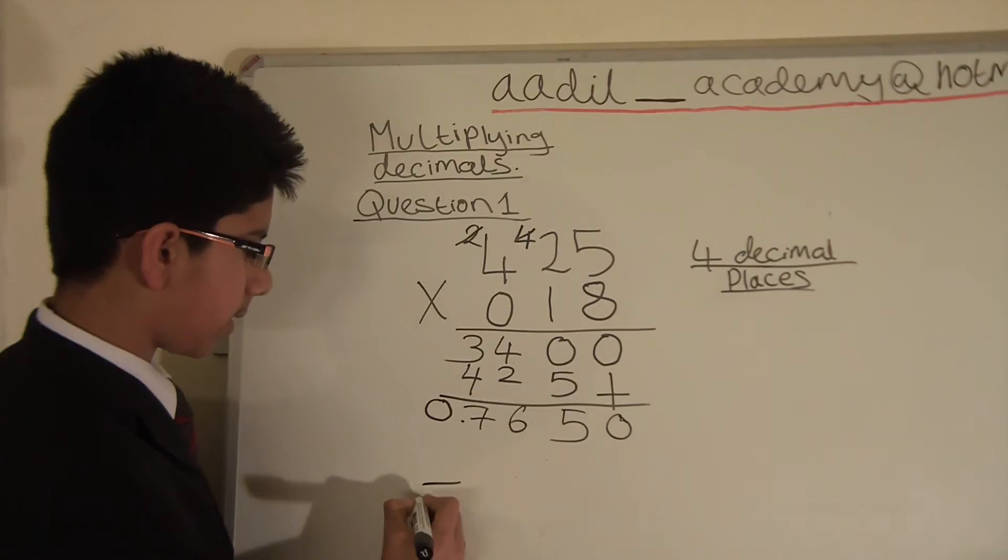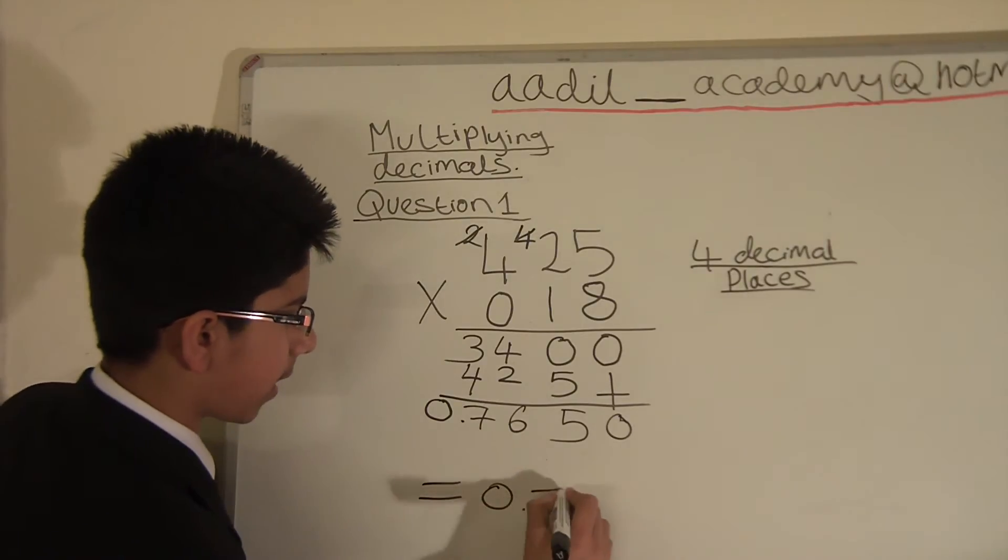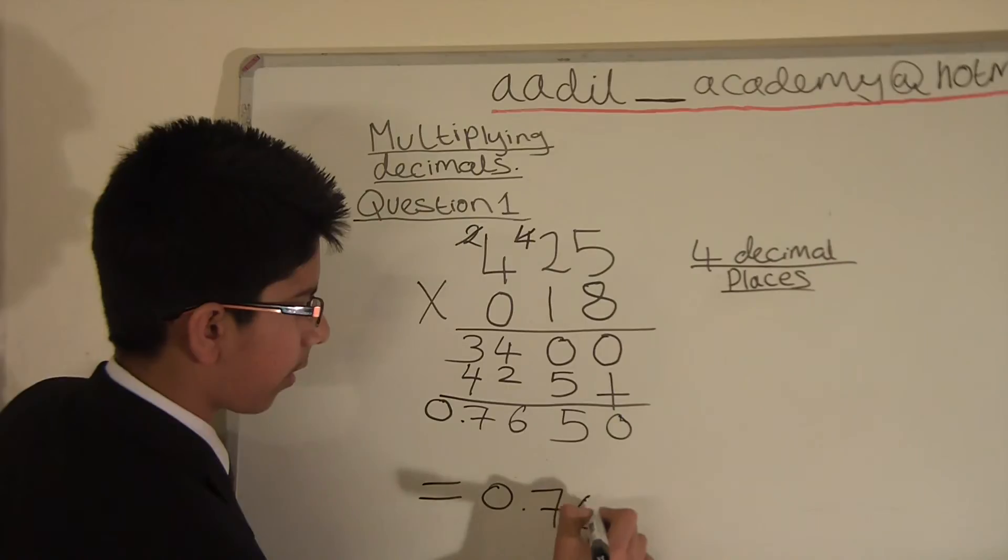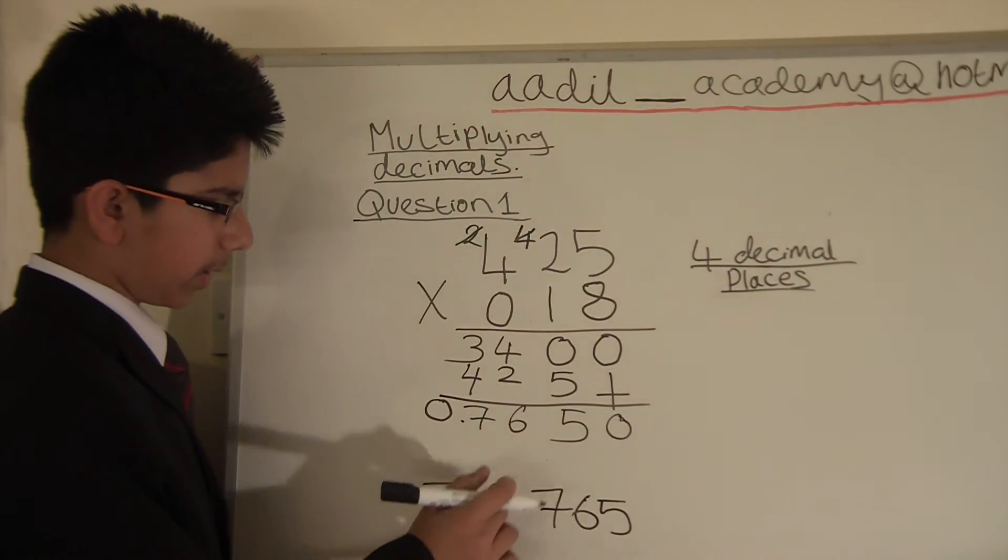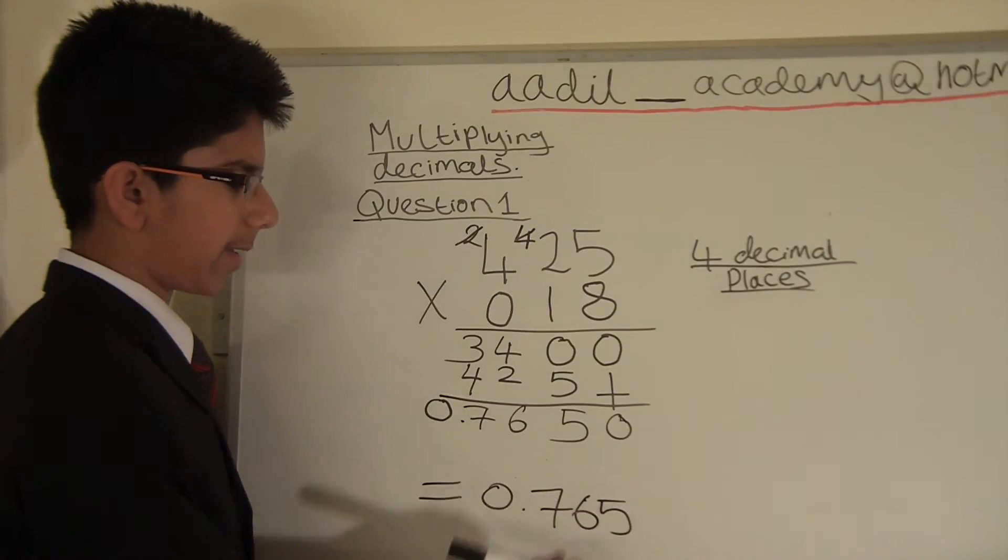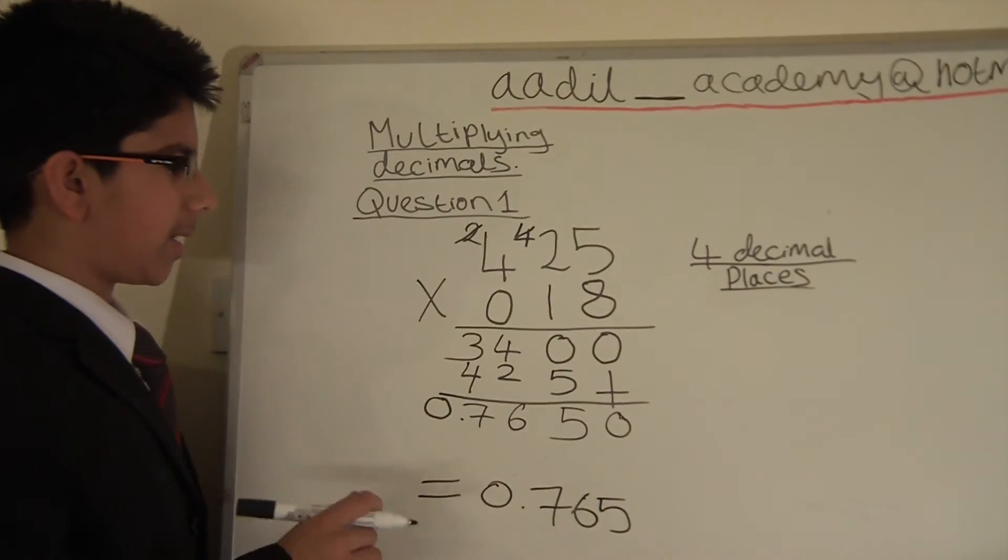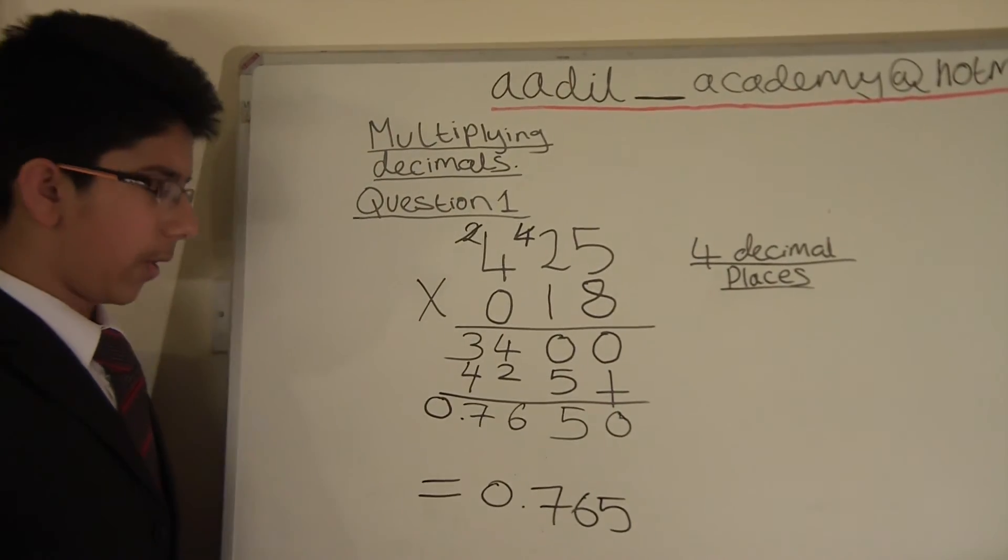Our answer is 0.765. We don't have to write the 0 because 0.765 has the same value as 0.7650.